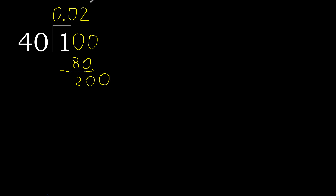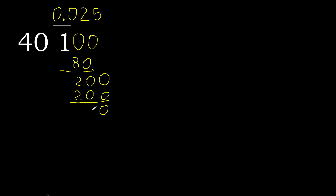200. 40 multiplied by 5 is 200. Subtract: 0. Therefore finish it.